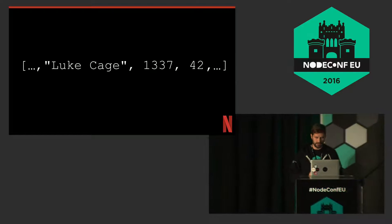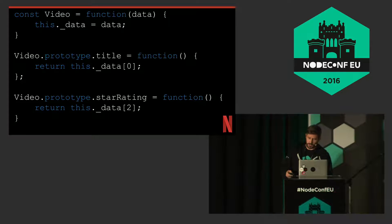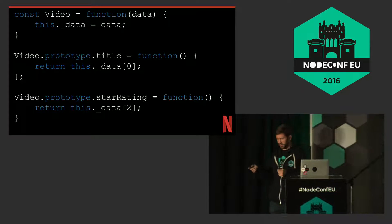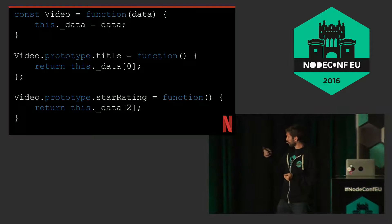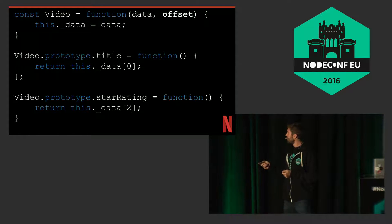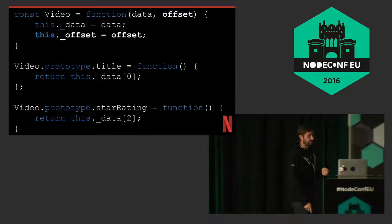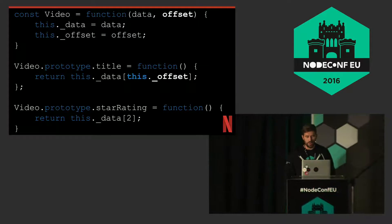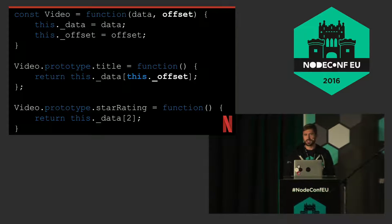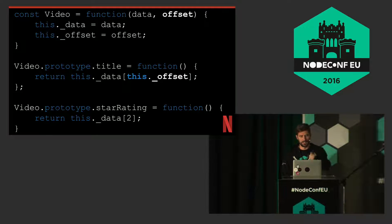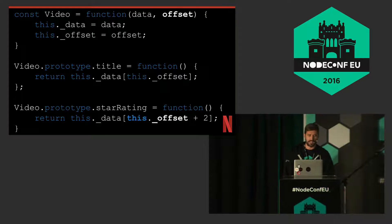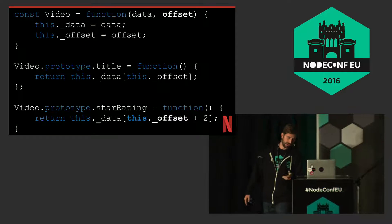How would we alter the previous code? We'd take the constructor and add one more item: offset. We need to know where in our array our video starts, so we save that off and update the title method with the offset. Instead of calling data[0], we call data[offset], because that's where our title is. For star rating, we add two to the offset.